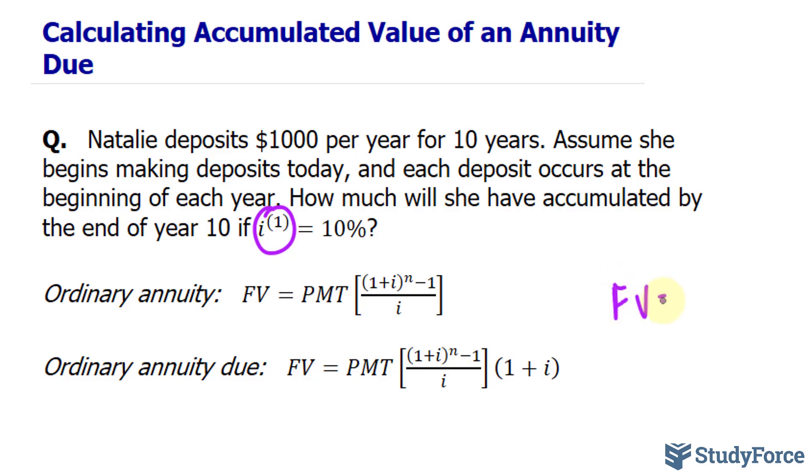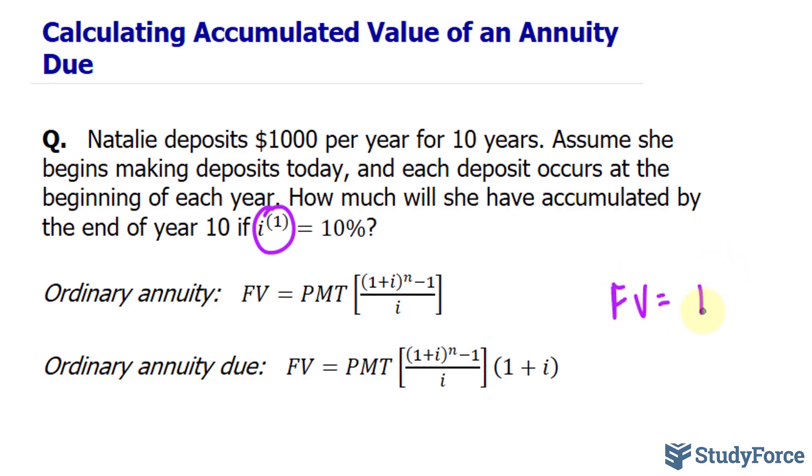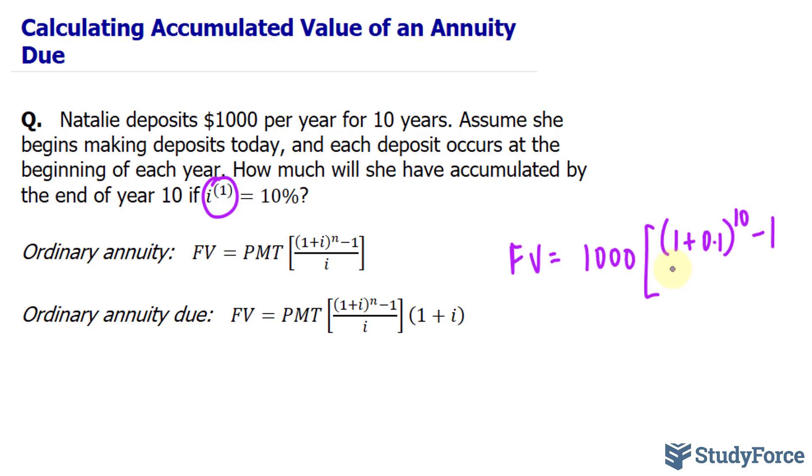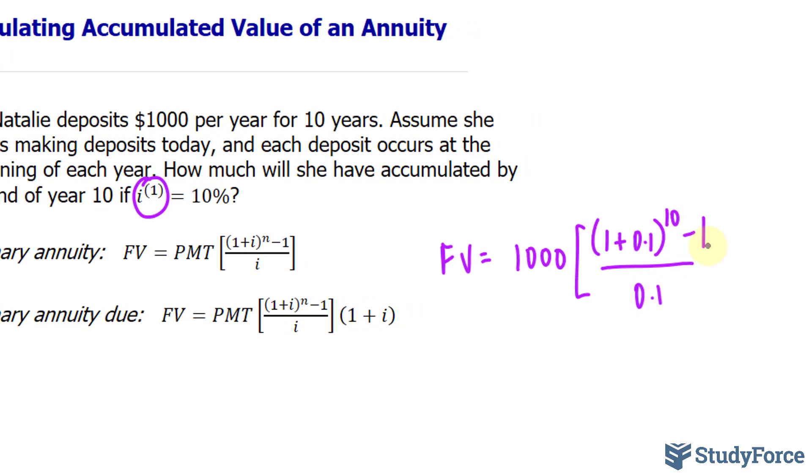We have the future value is equal to the payments being made, which are $1,000. In parentheses, 1 plus our interest is 10%. And because it's compounded annually, we don't need to divide the 10% by anything. So I'll write down 0.1, close parentheses, and the amount of periods, since it's happening once every year for 10 years, that means n is equal to 10, minus 1 over 0.1 again.